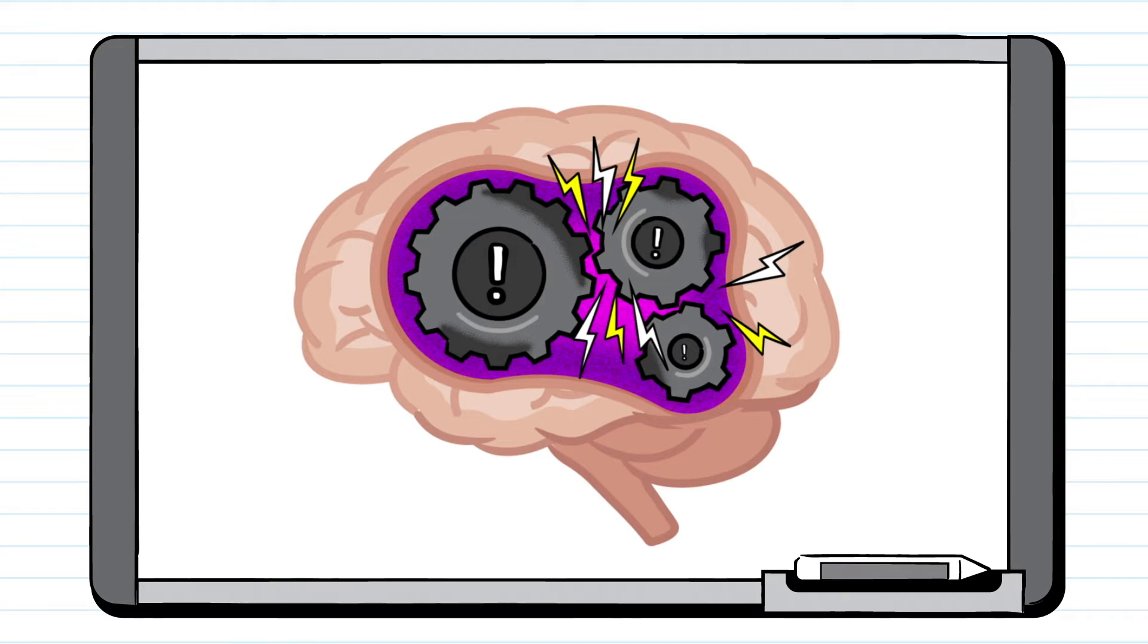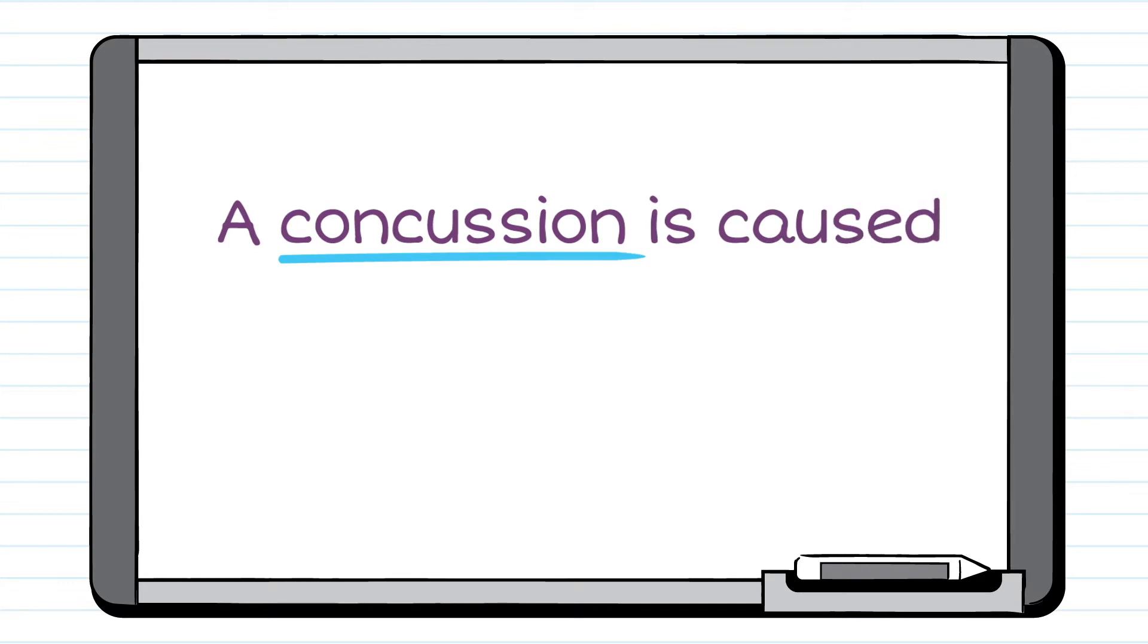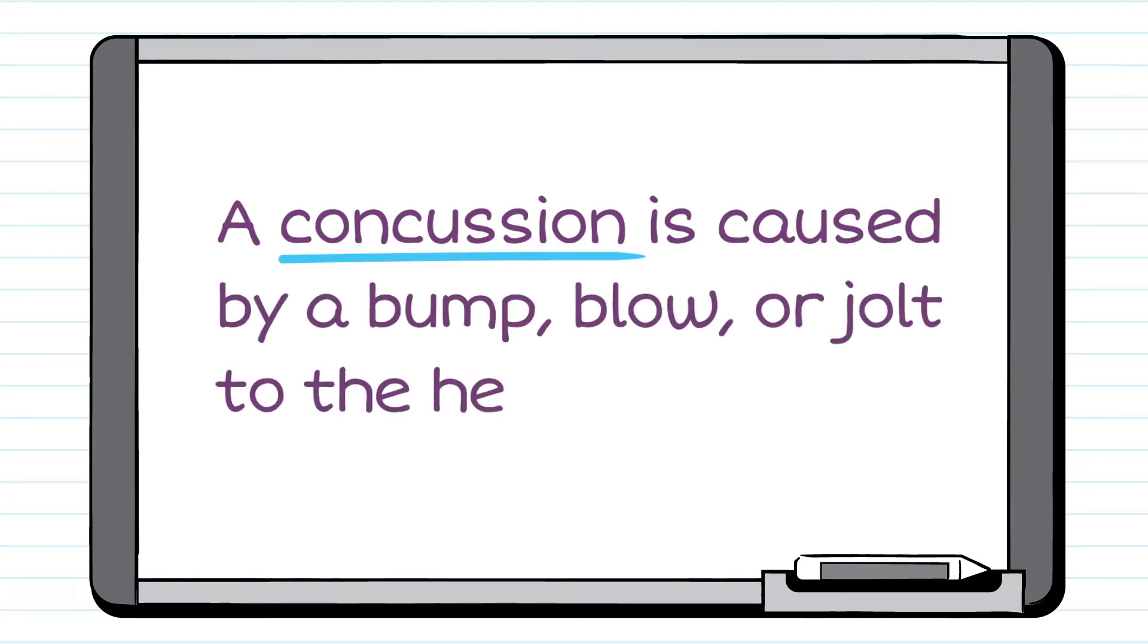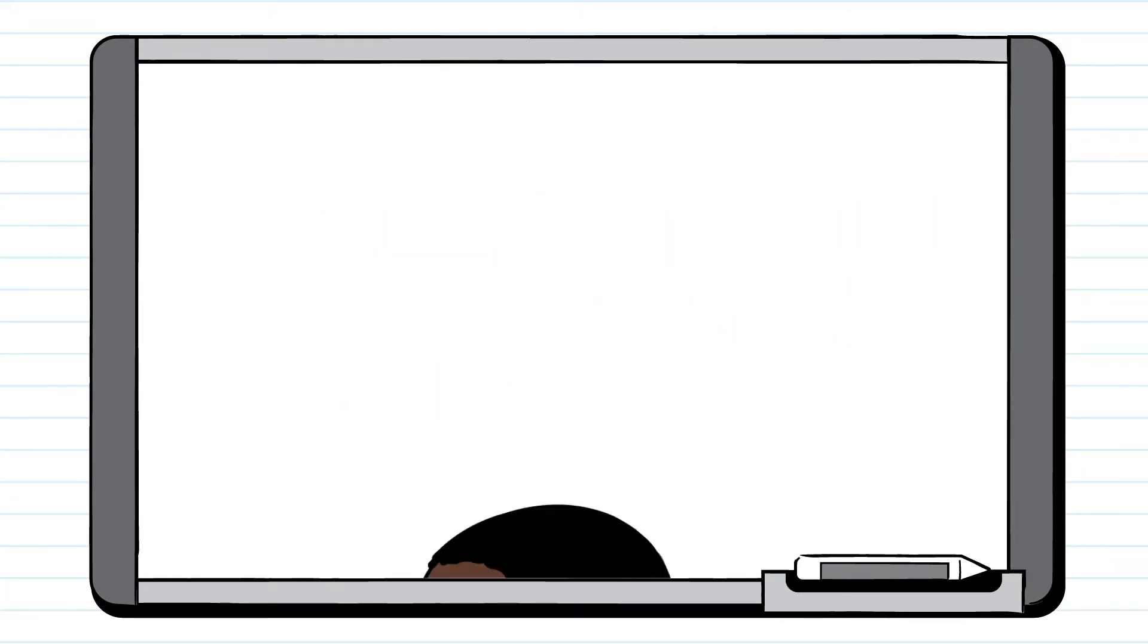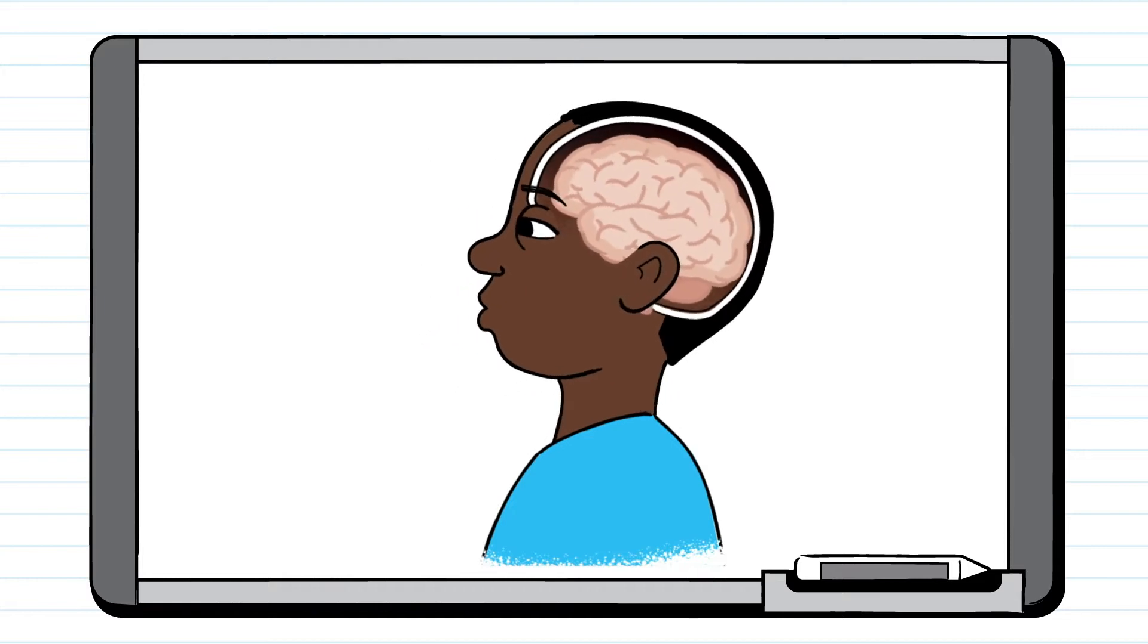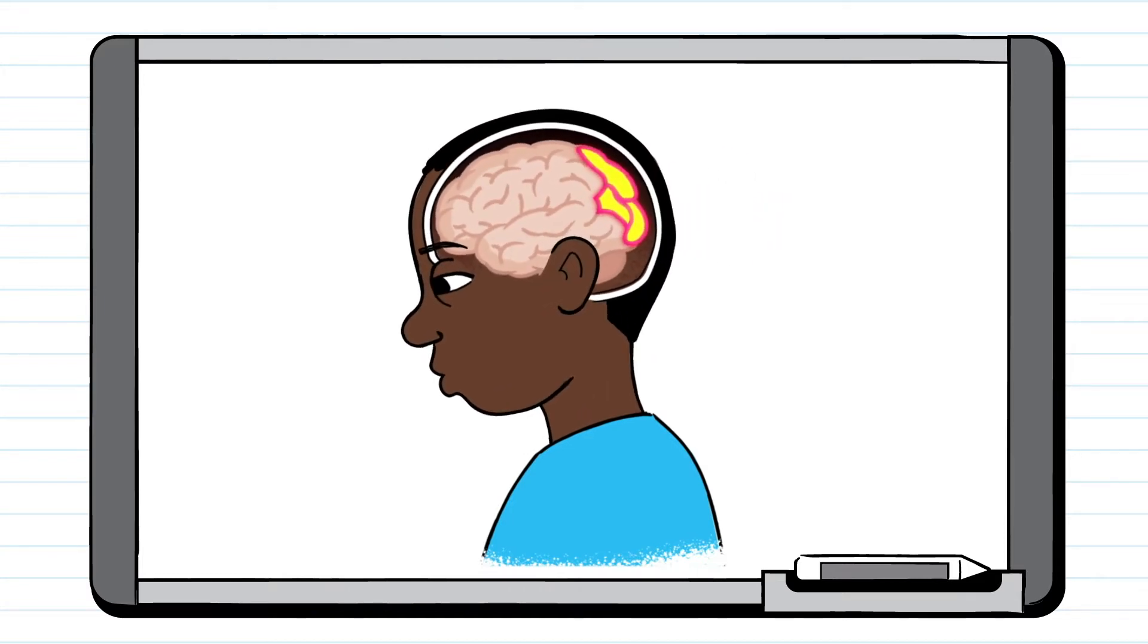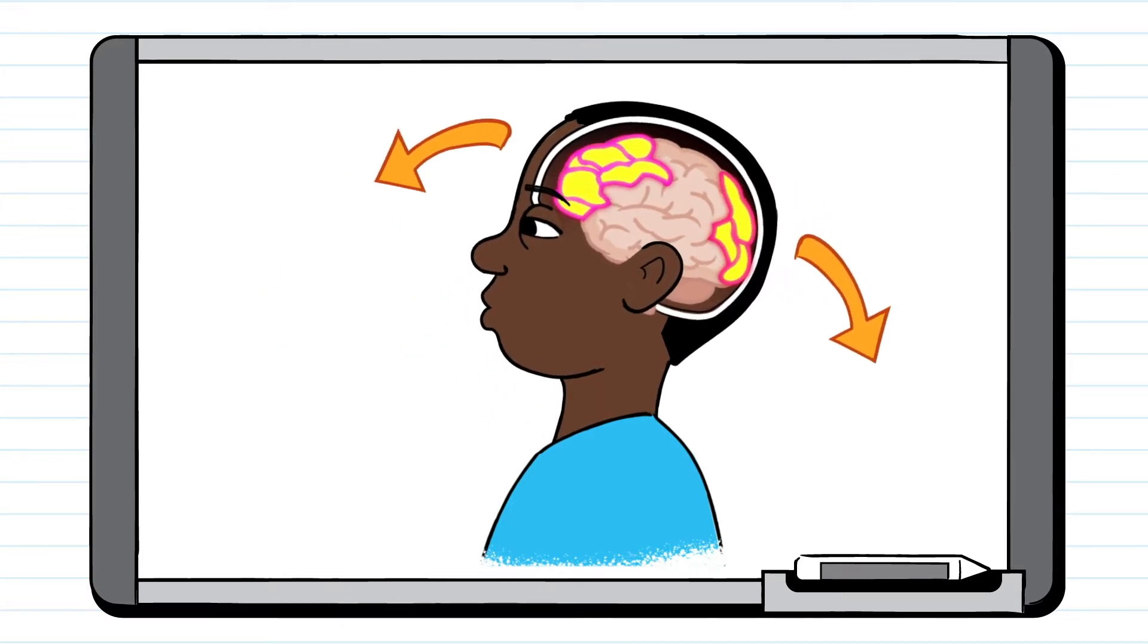Then several lightning bolts appear throughout the brain. A concussion is caused by a bump, blow, or jolt to the head. Concussions can also be the result of a fall or blow to the body that causes the head and brain to move rapidly back and forth.